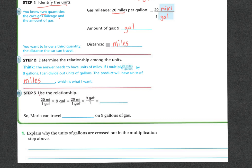So step three is using the relationship. If I write out 20 miles over one gallon times nine gallons, it's going to be the same thing as equaling 20 miles over one gallon. I can cross my gallons out, nine gallons over one. So now I have 20 times nine, which is 180 over one, which is 180 miles.